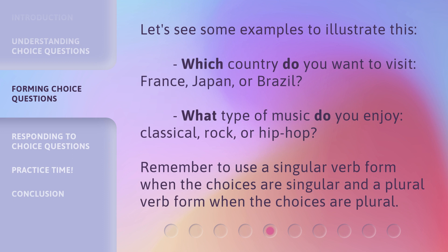Here are some examples: Which country do you want to visit, France, Japan, or Brazil? What type of music do you enjoy, classical, rock, or hip-hop? Remember to use a singular verb form when the choices are singular and a plural verb form when the choices are plural.